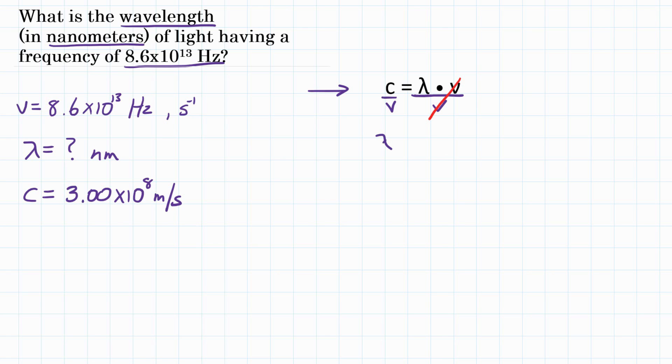So we can now rewrite as wavelength is equal to the speed of light over frequency. So now we can fill in our values. Wavelength equals c, the speed of light, is on top, and that is 3.00 times 10 to the 8th meters per second. And we are dividing by frequency, and that is 8.6 times 10 to the 13th. And we are going to use the units of seconds to the negative 1 power, which is the same as hertz.